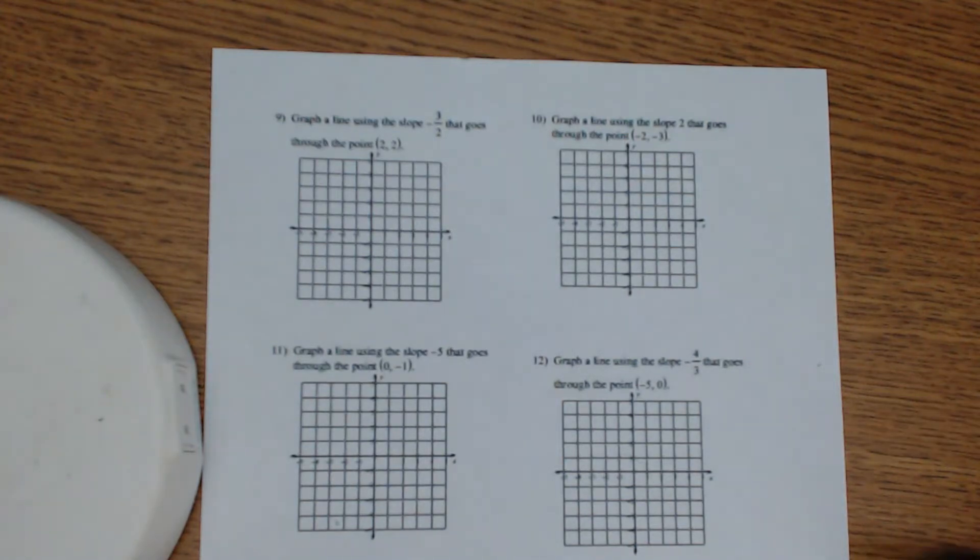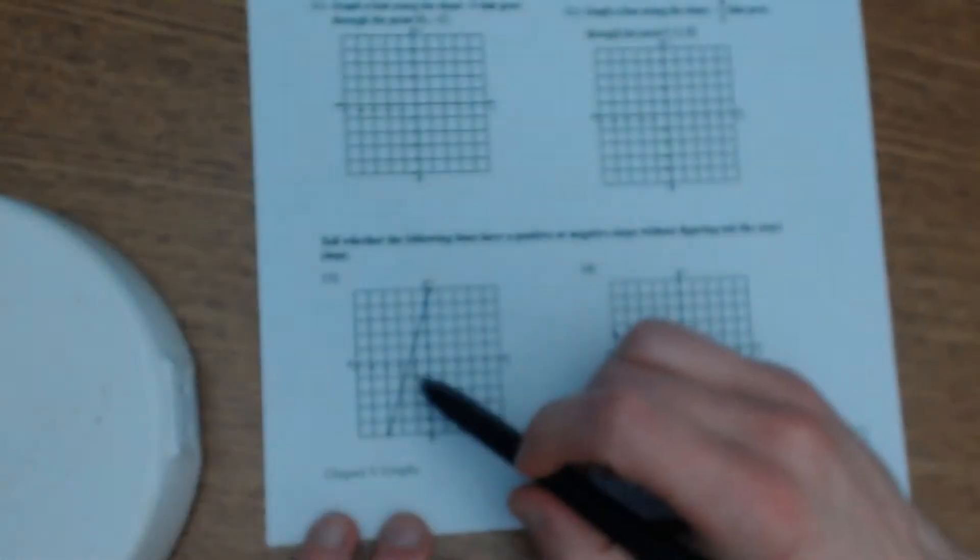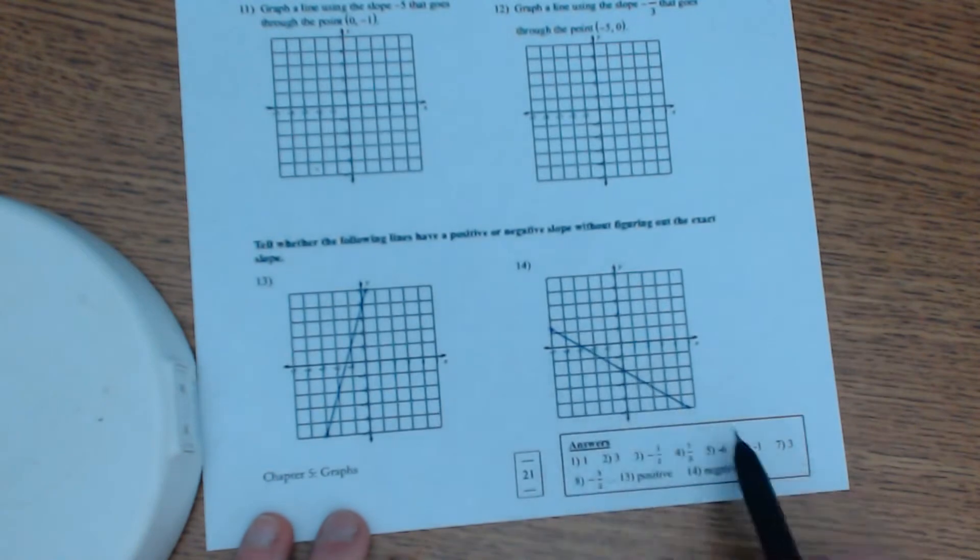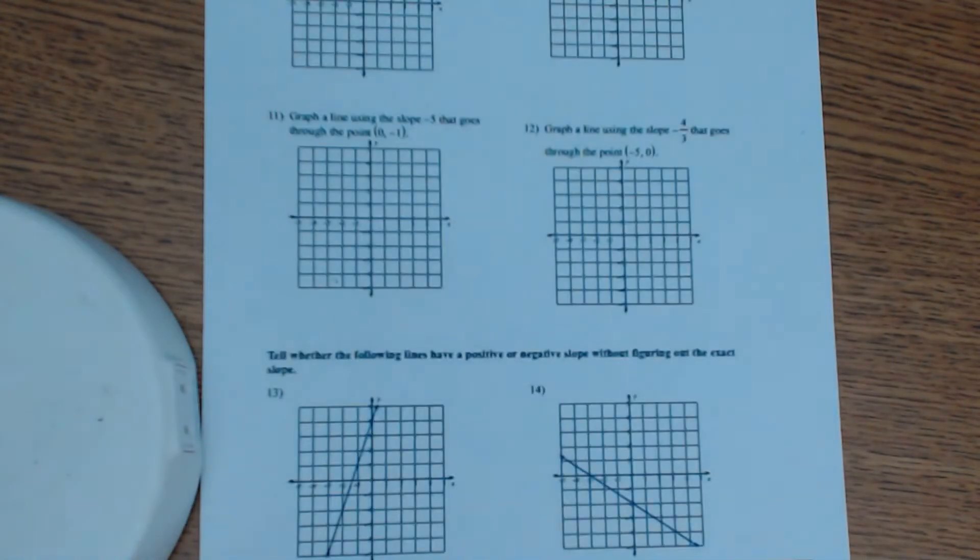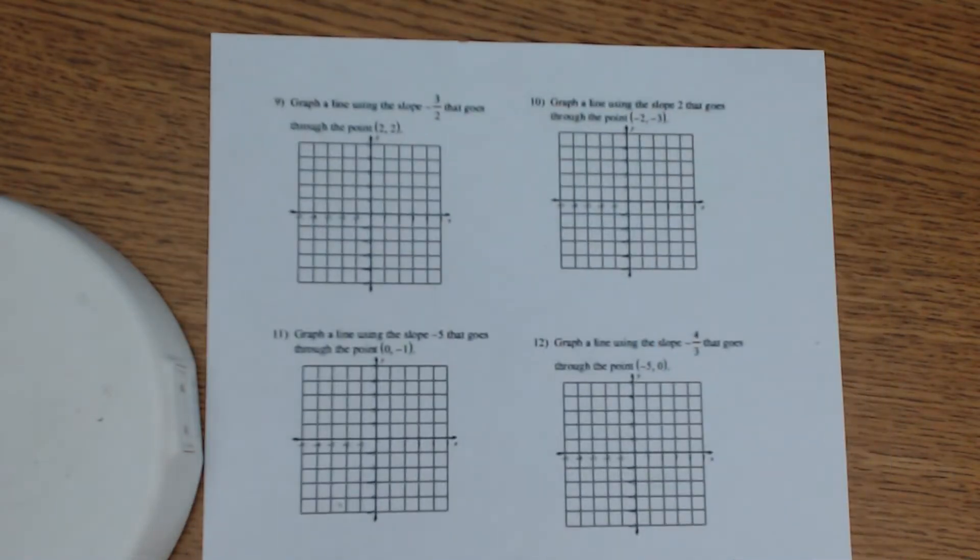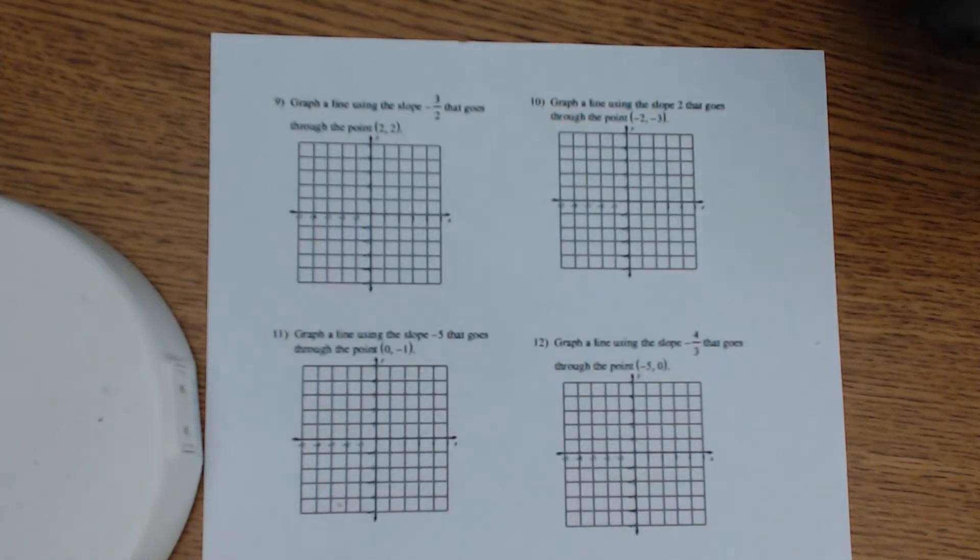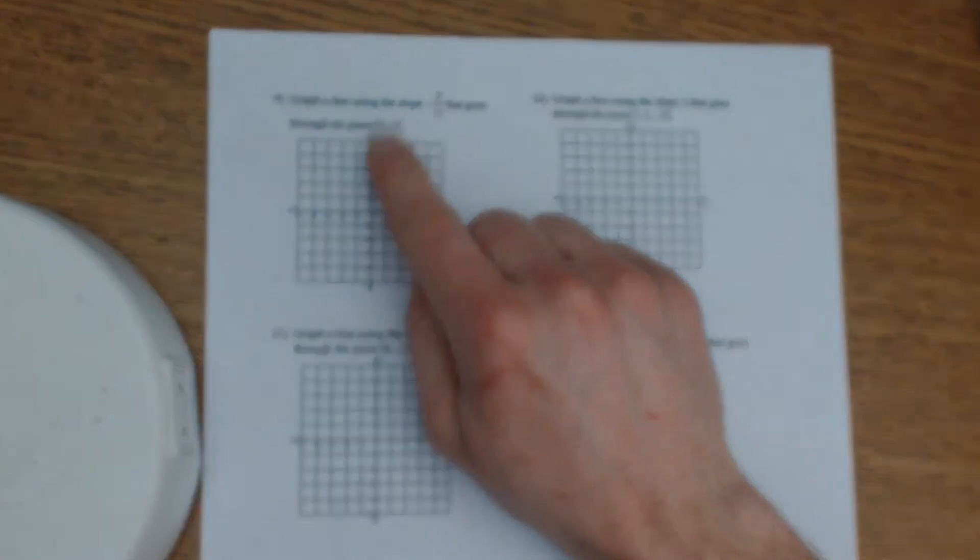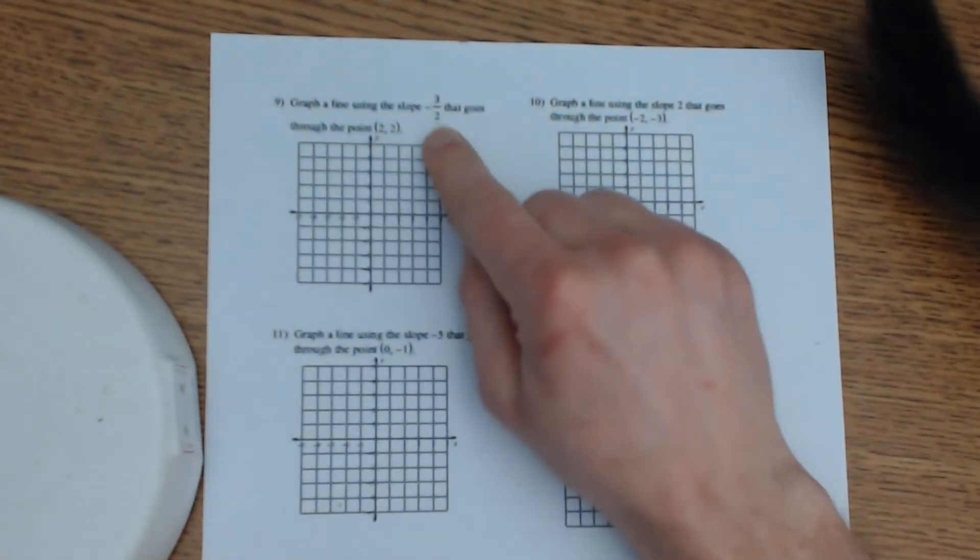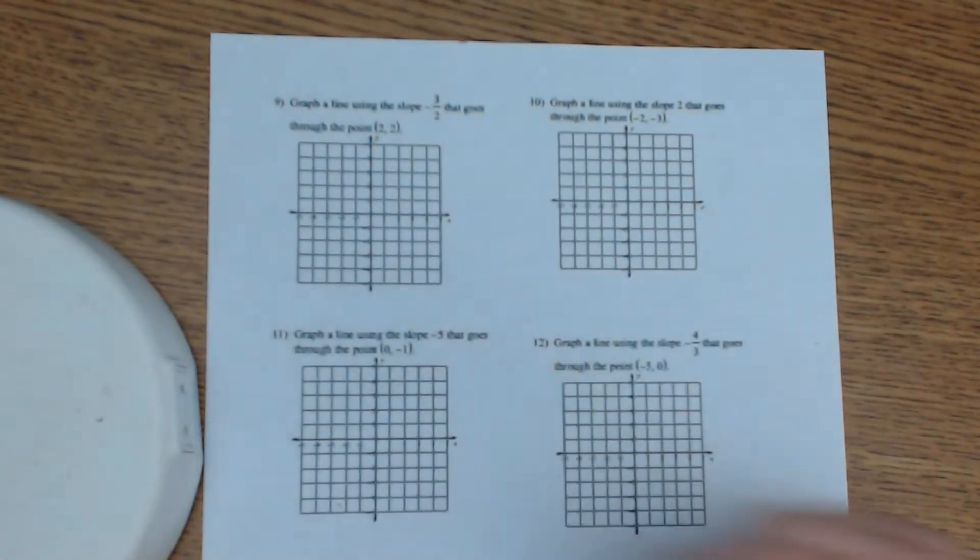All right, everybody. So in our last lesson, you learned about slope and that slope has to do with the steepness of a given line. What we're going to be doing in this lesson is a little bit in reverse. Rather than being given a line and asked to find the slope of the line, you're going to be given both a point on a line and the slope of the line, and you're going to graph it.